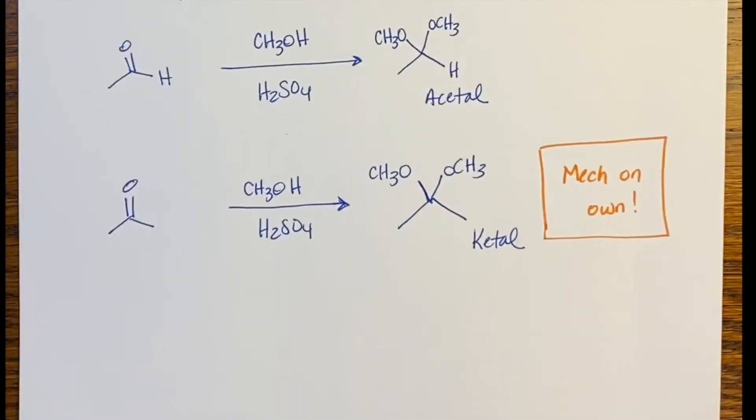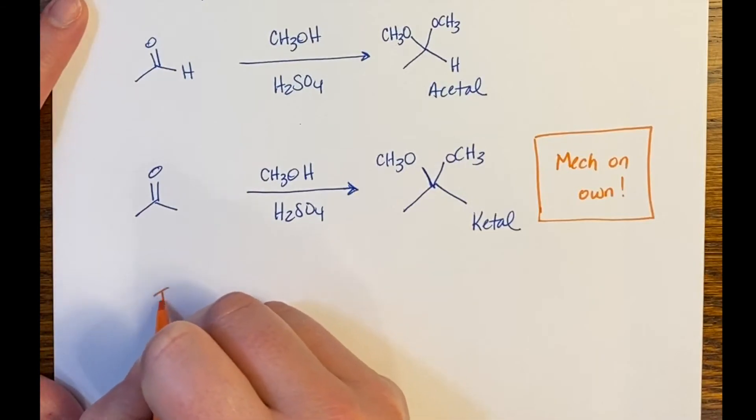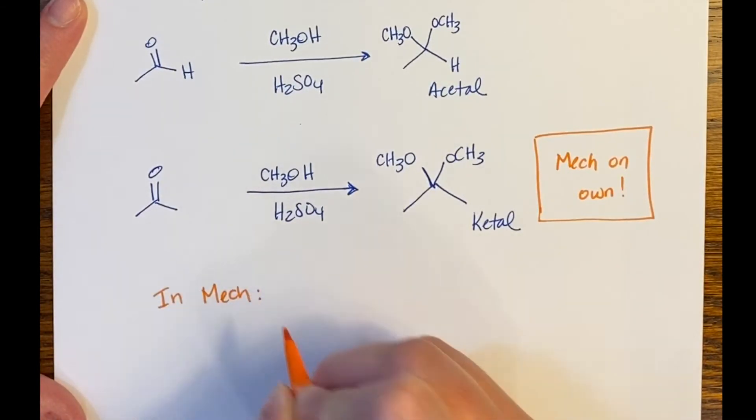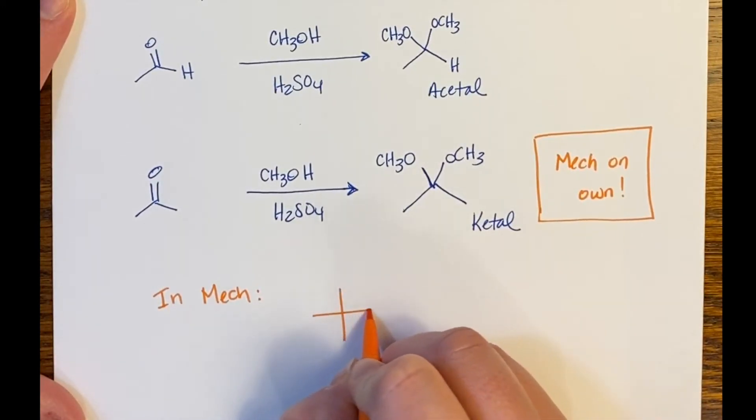So what I want you to do is I want you to go through the mechanism for the ketal on your own and during the course of the mechanism, you're going to form an intermediate that looks like this.